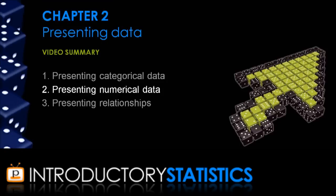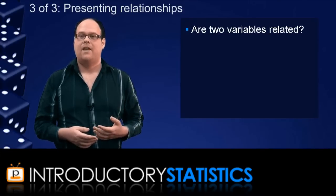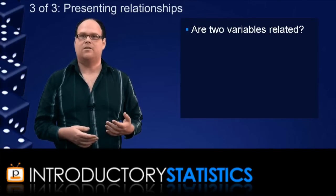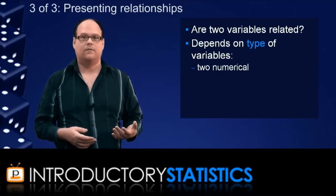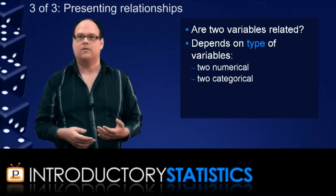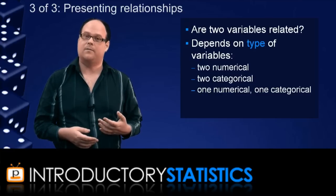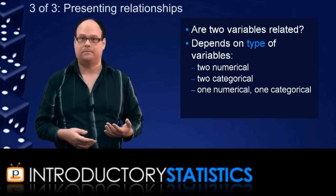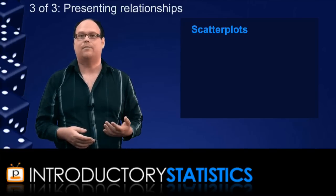To finish off this summary, we'll have a look at presenting relationships. Now, this is the topic that comes up when you have two variables, and you want to see if the variables are related in any way. How you present the relationship depends on what sort of variables you have. You might have two numerical variables, or two categorical variables, or you could have one of each. Now, we'll be spending most of our time talking about relationships between two numerical variables. In that situation, we use what is called a scatter plot.